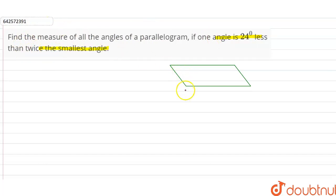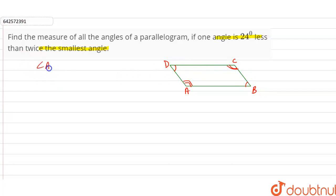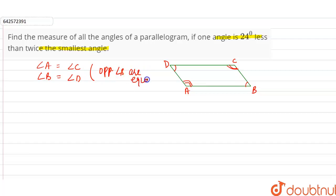So let's say this is a parallelogram A, B, C, D. Now, opposite angles of a parallelogram are equal. So we can say angle A is equal to angle C, and angle B is equal to angle D. Reason: opposite angles of a parallelogram are equal.